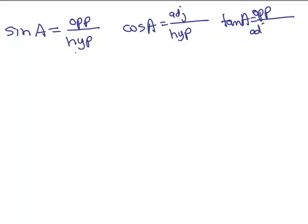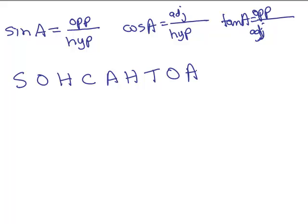The sine is opposite over hypotenuse, cosine is adjacent over hypotenuse, and tangent is opposite over adjacent. Looking at the first letters: sine-opposite-hypotenuse gives S-O-H; cosine-adjacent-hypotenuse gives C-A-H; and tangent-opposite-adjacent gives T-O-A. Some people remember this as SOH-CAH-TOA. Whatever works for you — you have to remember it one way or the other.